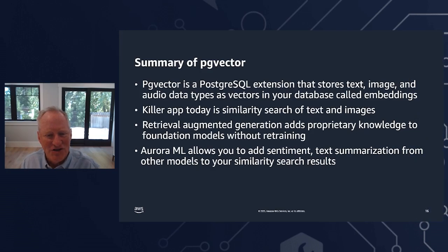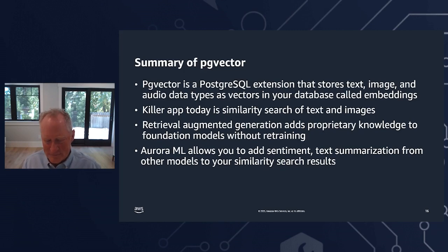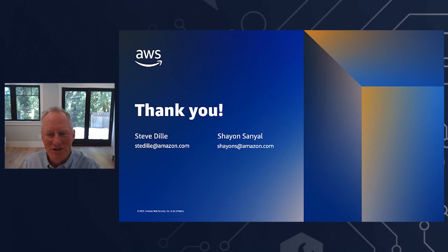For a quick recap: PG Vector is a PostgreSQL extension that allows you to store text, image, and other data types as vectors in your database called embeddings. The killer app we see from customers is similarity search of text and images. Retrieval augmented generation allows you to add proprietary knowledge to foundation models without retraining them. Aurora ML makes it easier to connect your database to your LLM in SageMaker, and also allows you to add sentiment and text summarization from other models to your similarity search results. We can't wait to see what you build with PG Vector!